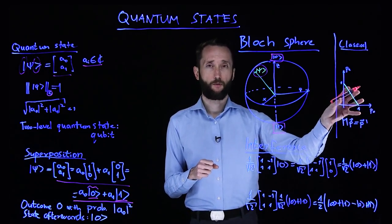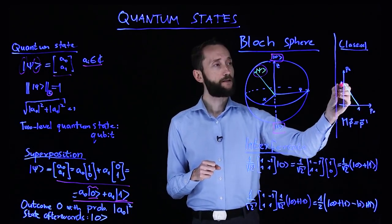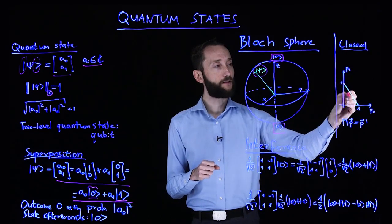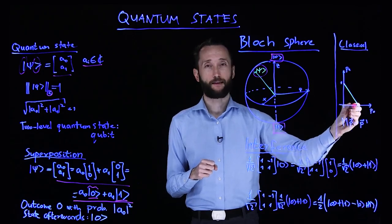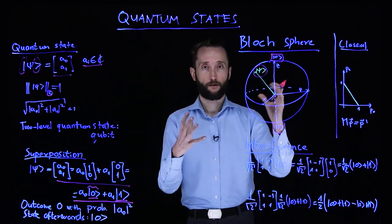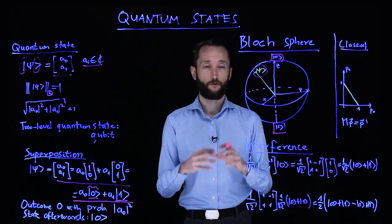Every single probability distribution lies on this straight line as opposed to this large two-dimensional surface of the Bloch sphere.